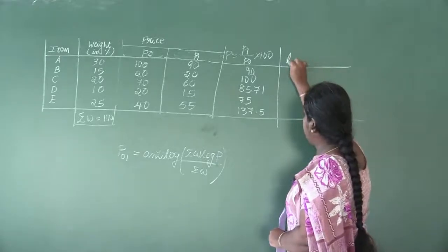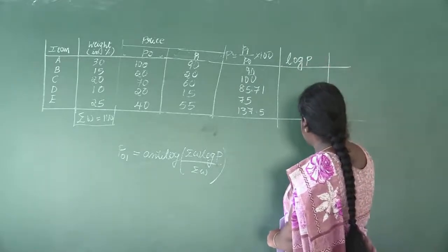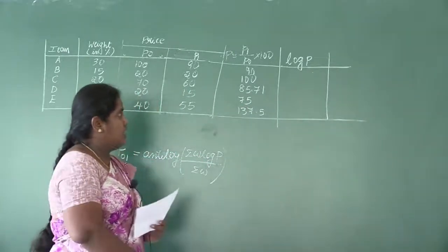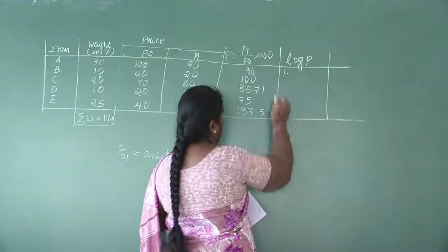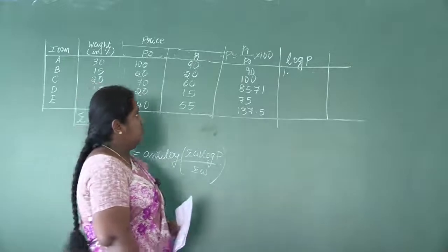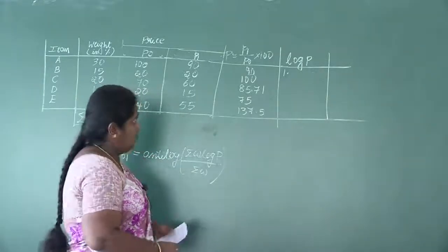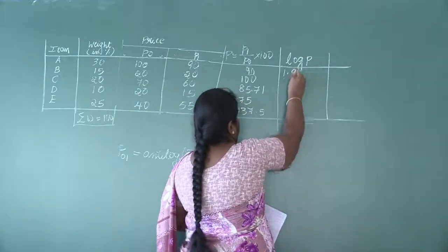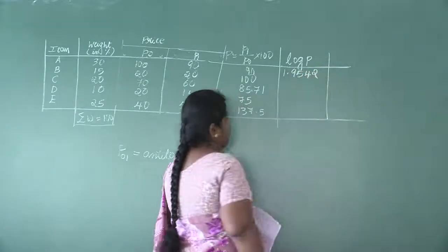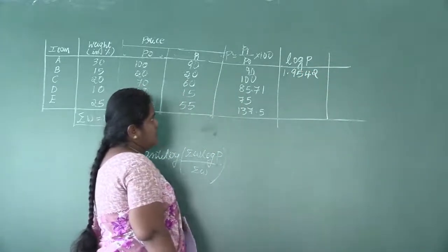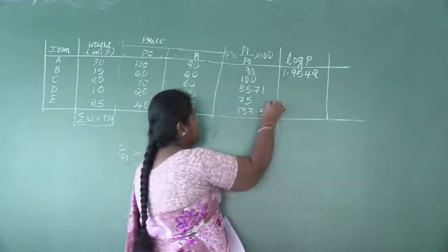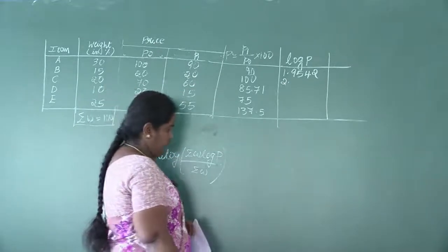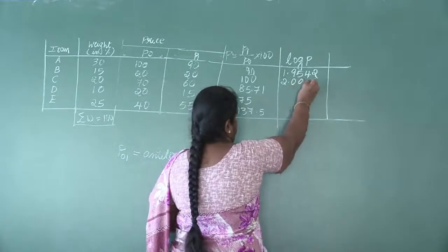Now we find log P for each value. For 90: it is a two-digit number, so the characteristic is 2 minus 1 = 1. From the logarithm table, the value for 90 under 0 is 9542, so log 90 = 1.9542. For 100: three-digit number, characteristic is 2. The table value for 10 under 0 is 0000, so log 100 = 2.0000.